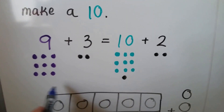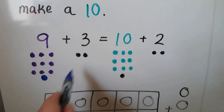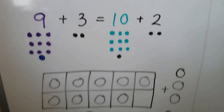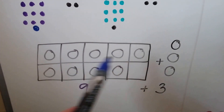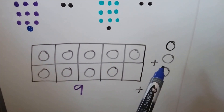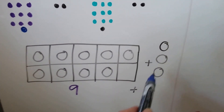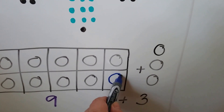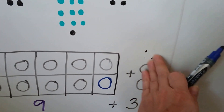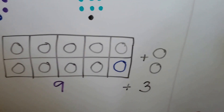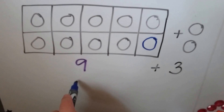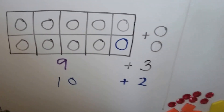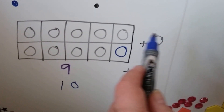We give it to the 9, now we have 10 and a 2. If we have 9 and we want to add 3, we take one of the 3 away, we give it to the 9, and it makes a 10. Now we have 10 plus 2 — we gave that 1 to the 9 and made a 10.